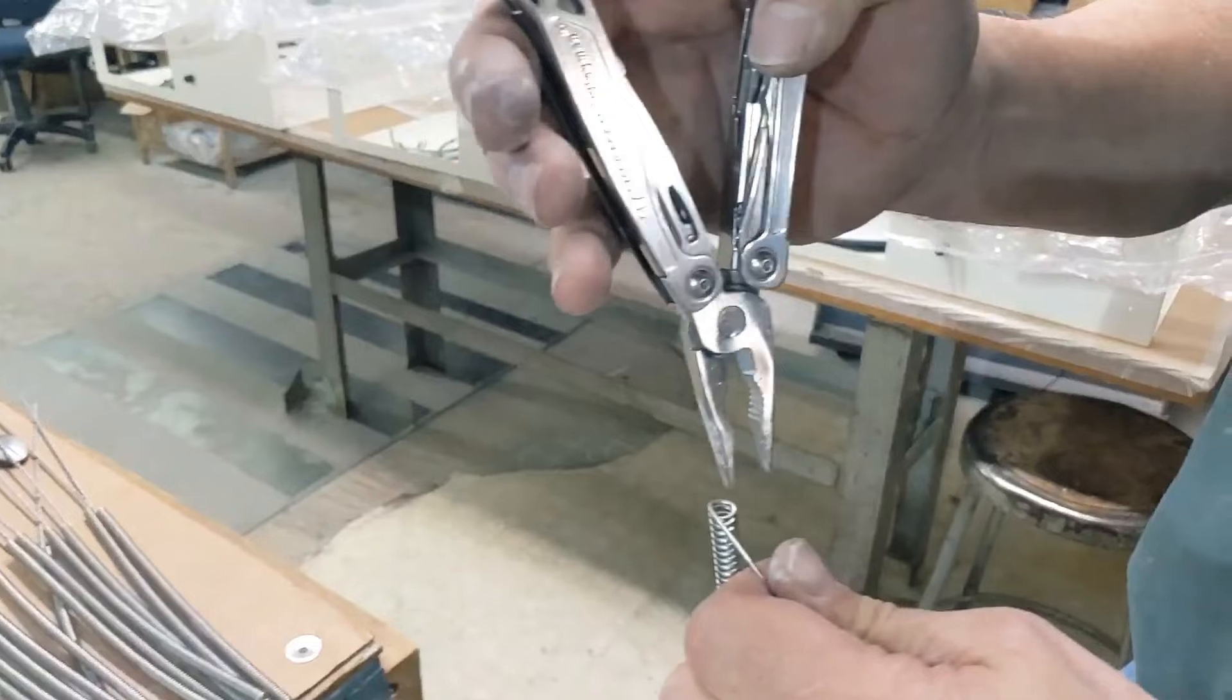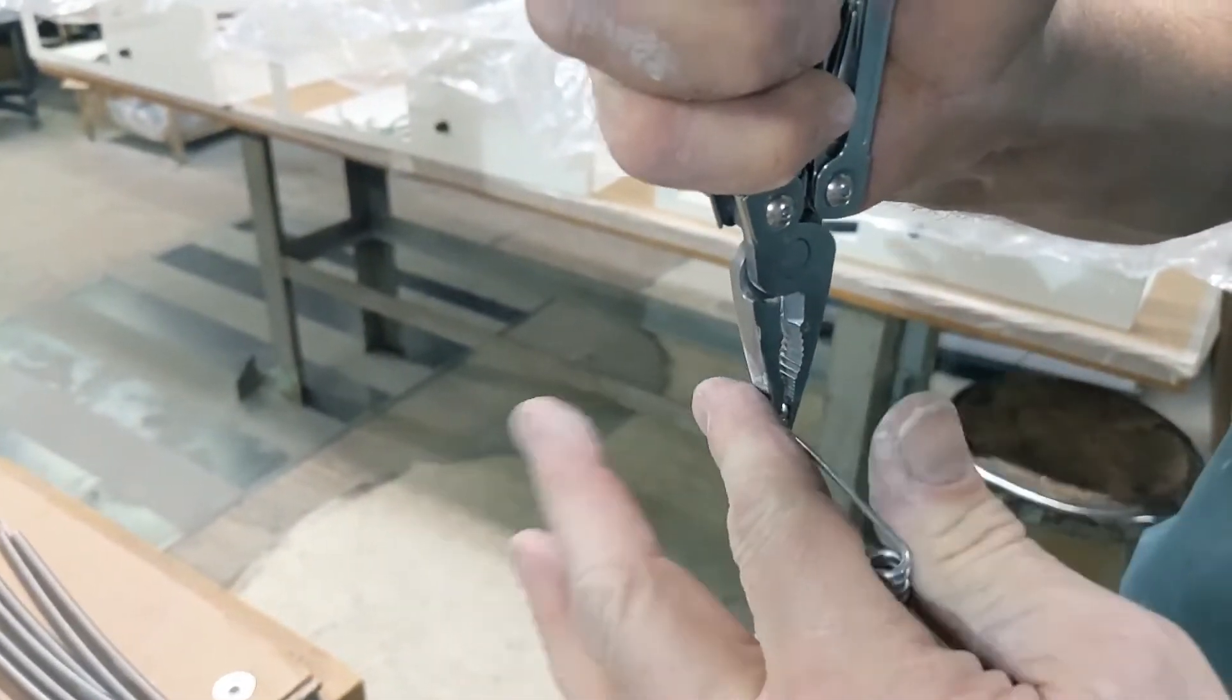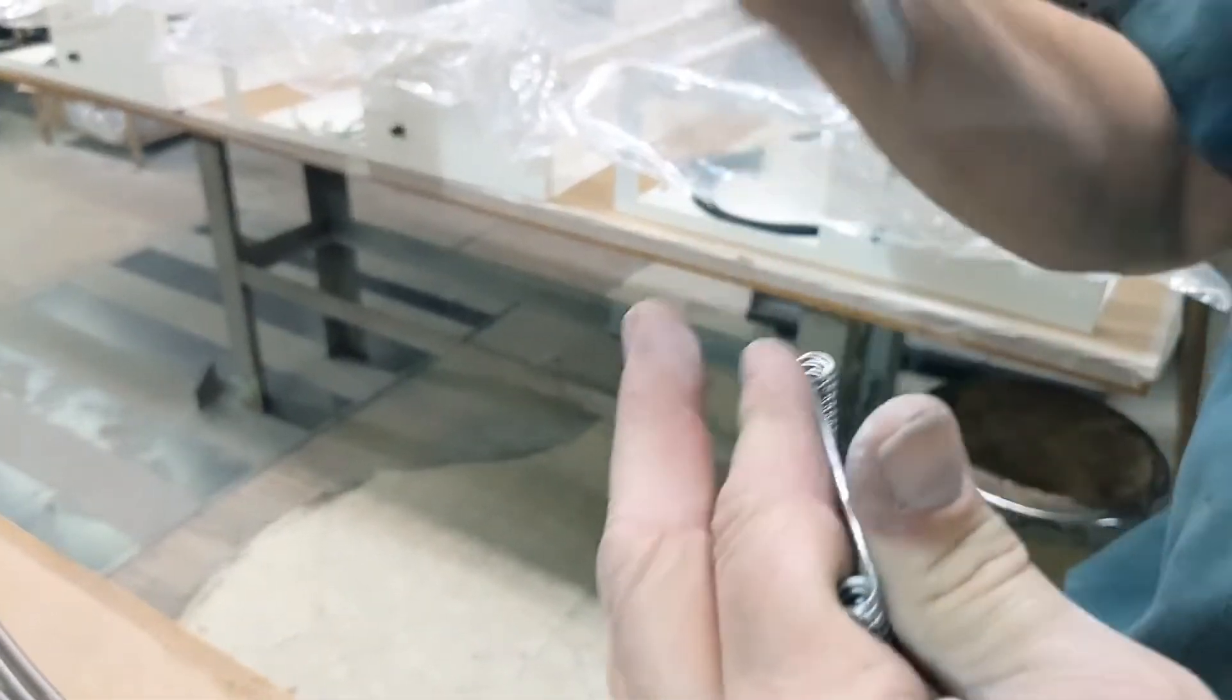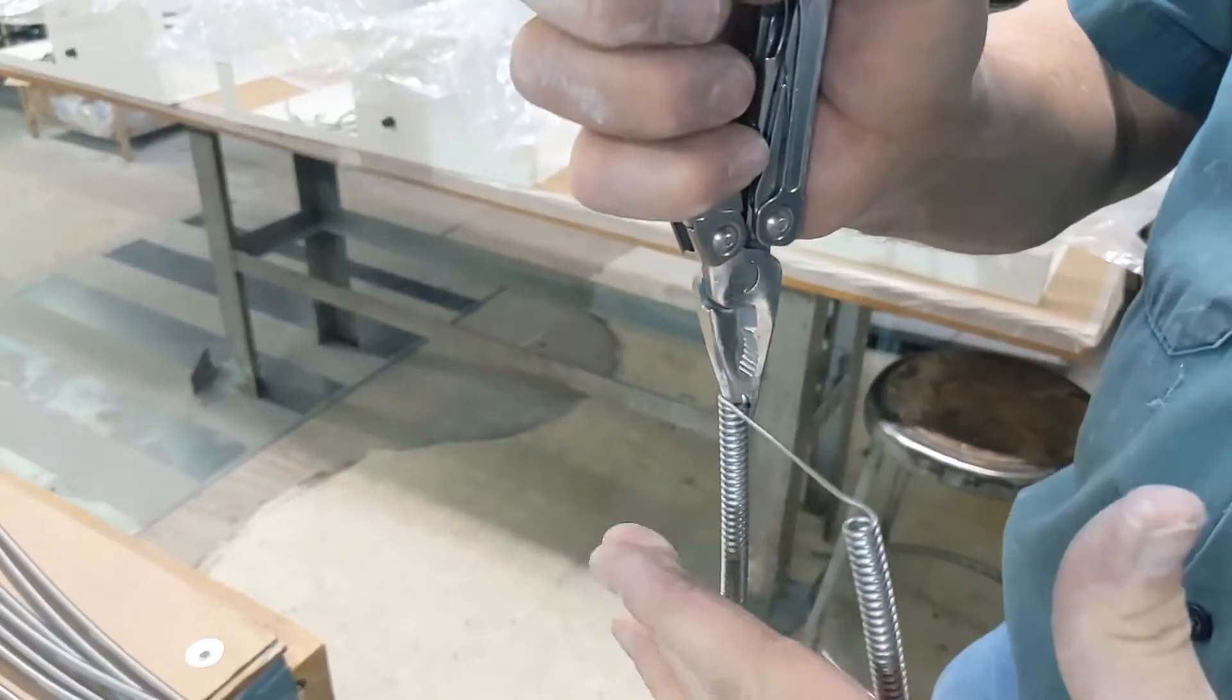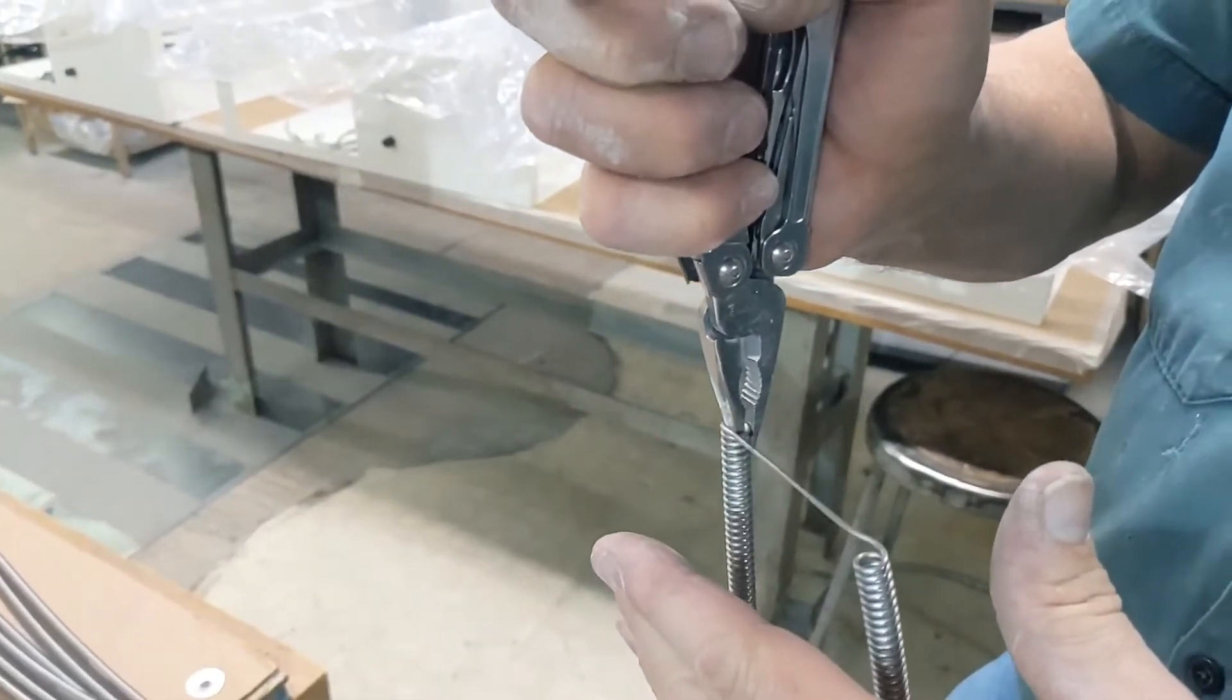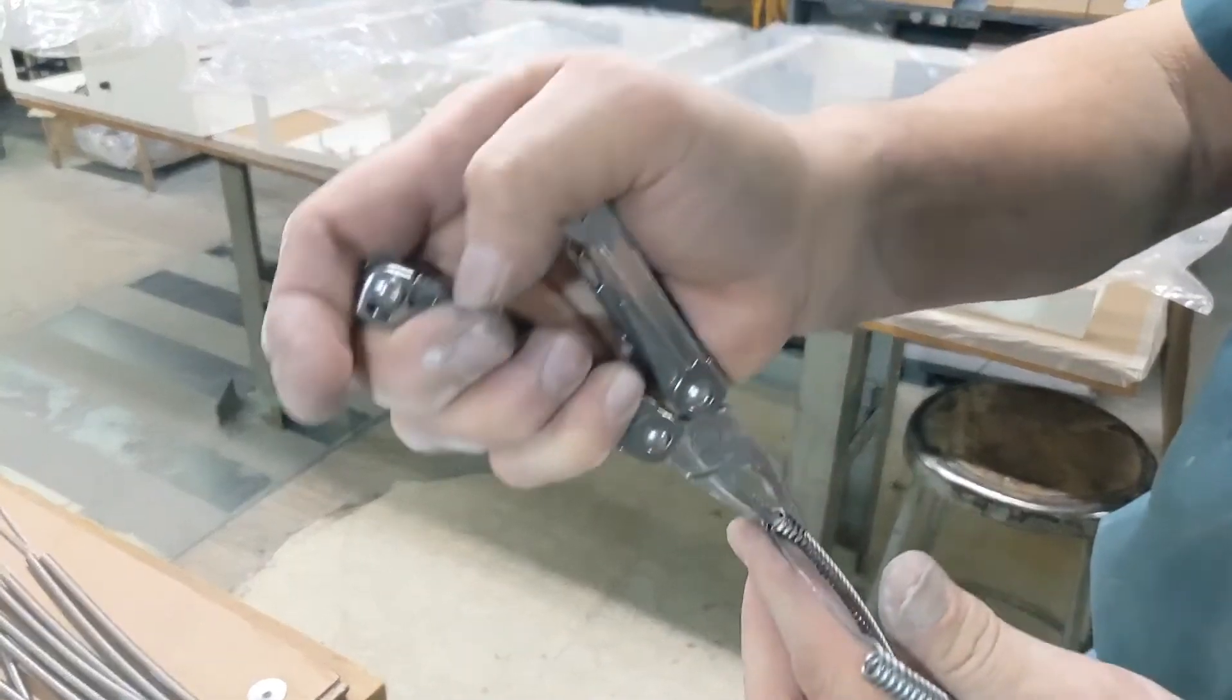Starting first with the bottom element, you want to grab the inside of the element coil with a pair of needle nose pliers. You want to twist the coil outward approximately one quarter of a turn. This will increase the distance between the center of the element coils. We want to repeat this step for both sides of the heating element.